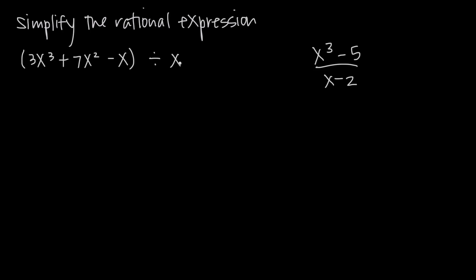It's just like the long division we learned when we were first learning how to divide numbers. For example, if we had to divide 63 by 3, we could do long division. We take one digit at a time and ask how many times does 3 go into 6 — it goes in 2 times, since 3 times 2 is 6. We multiply 2 by 3 to get 6, then subtract: 6 minus 6 is 0. We bring down the 3, and 3 goes into 3 one time. 1 times 3 is 3, remainder is 0, so the answer is 21.